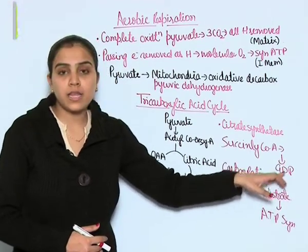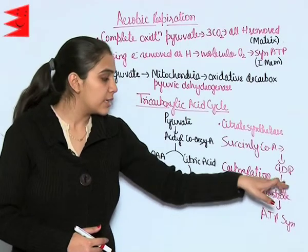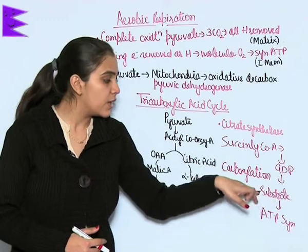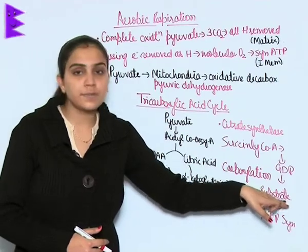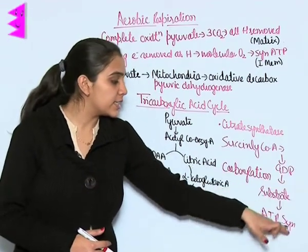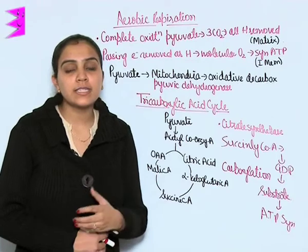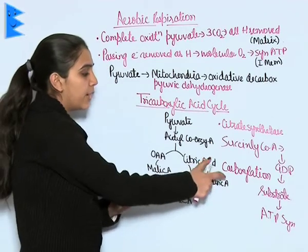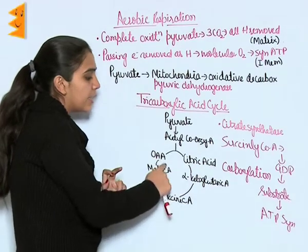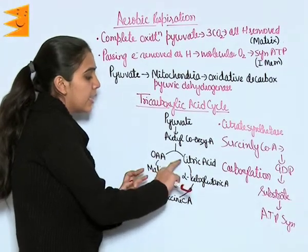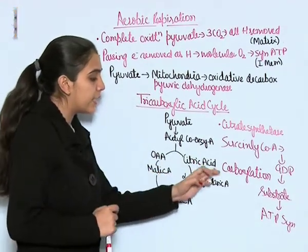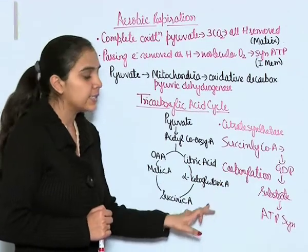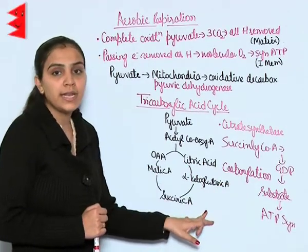When succinyl coenzyme A is converted to succinic acid, GDP is formed. This GDP formation is a substrate-level synthesis, which stimulates ATP synthesis. The step where oxaloacetic acid is converted into citric acid and then into alpha-ketoglutaric acid involves decarboxylation.